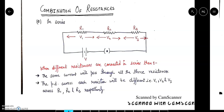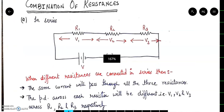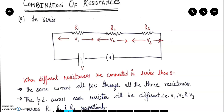Now we will start with the topic of today — combinations of resistances. We can combine resistances in two ways. We have also studied series and parallel combinations. In a series combination, there are three resistances R1, R2, R3 connected end to end. I have connected a battery across it, and I amount of current is flowing through this circuit.